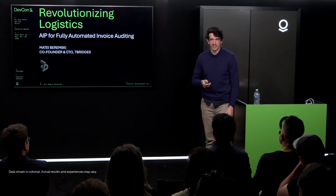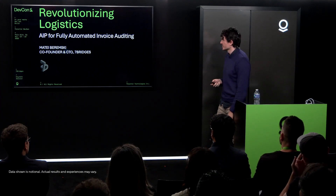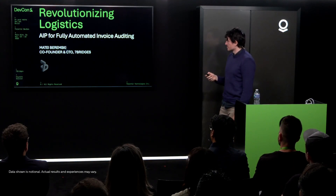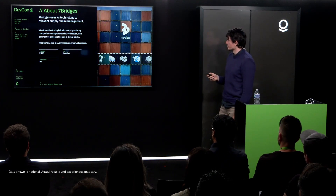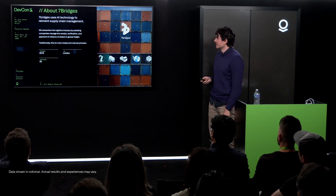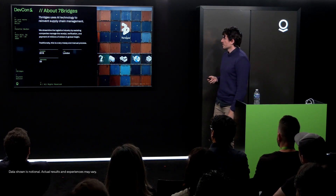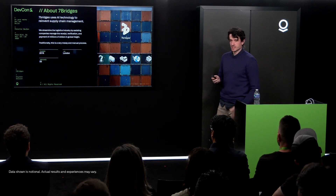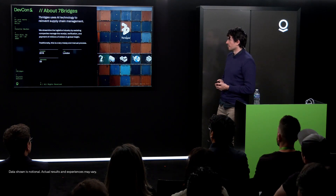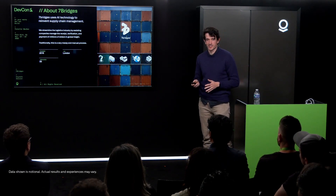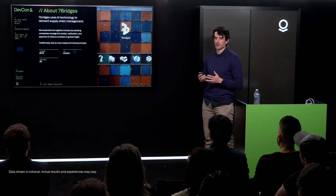Hi everyone, I'm Mate, the co-founder and CTO at Seven Bridges. Today I'm going to be talking to you about AI and supply chain and logistics. We are a startup based in the UK, a small company of about 55 people, and we are doing the exciting process of paying freight bills.